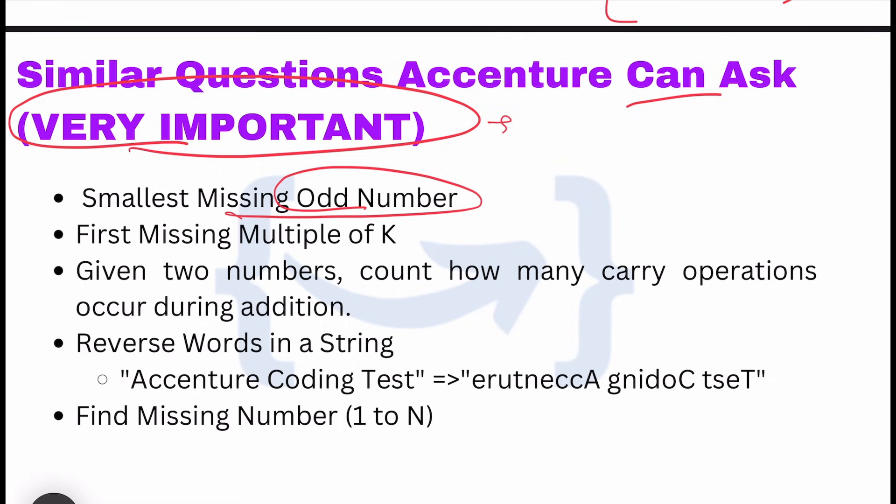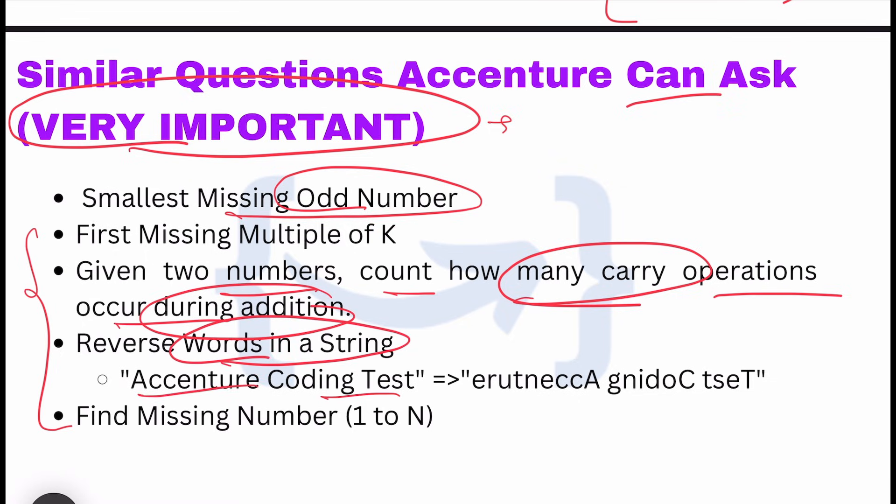Use a text extractor to copy from the screenshot and put it into ChatGPT, or just put the screenshot to ChatGPT and ask to create a story-based question. The underlying logic should be the question in the screenshot. Given two numbers, count how many carry operations occur during addition. Reverse words in a string - Accenture coding test. Find missing number from 1 to N is your practice question.